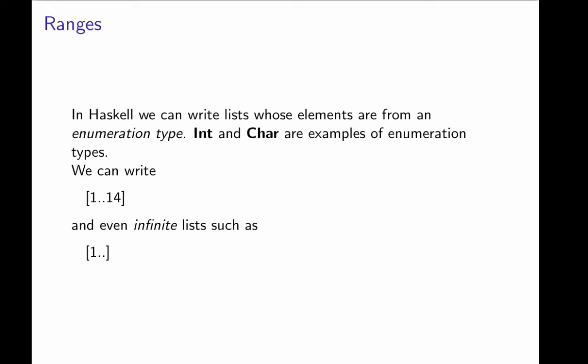But more than that, because we can write infinite lists, if we want a list of all the natural numbers, all we need to do is write [1..] in brackets. So that's a very short way of representing the list of natural numbers in Haskell.